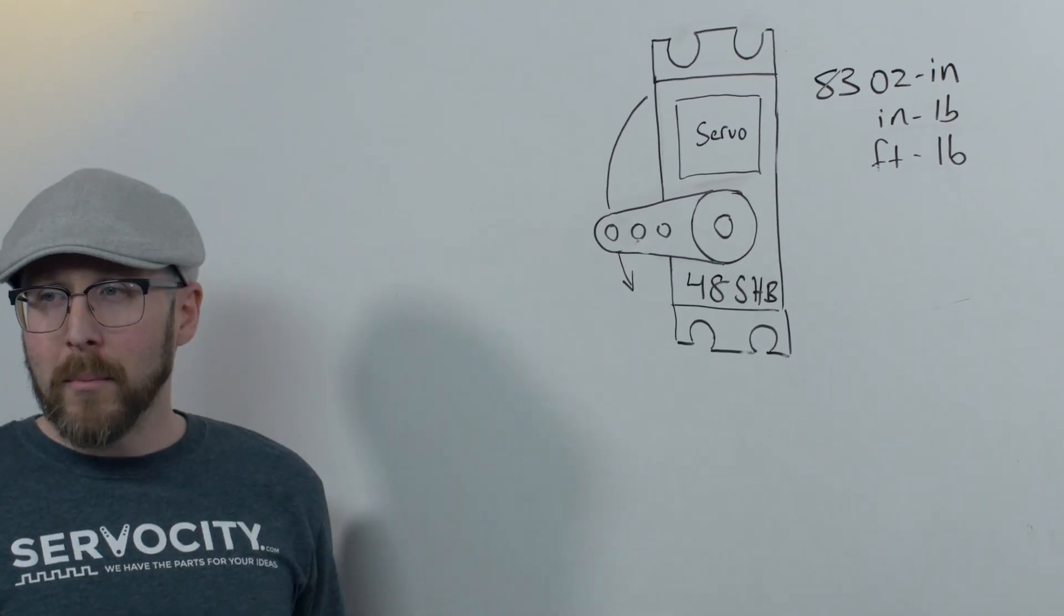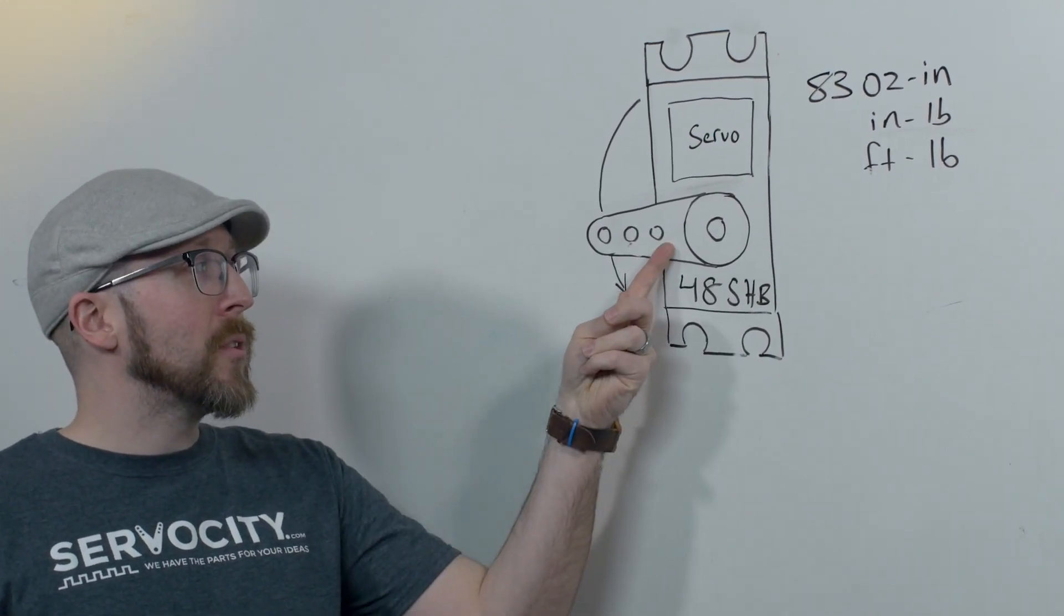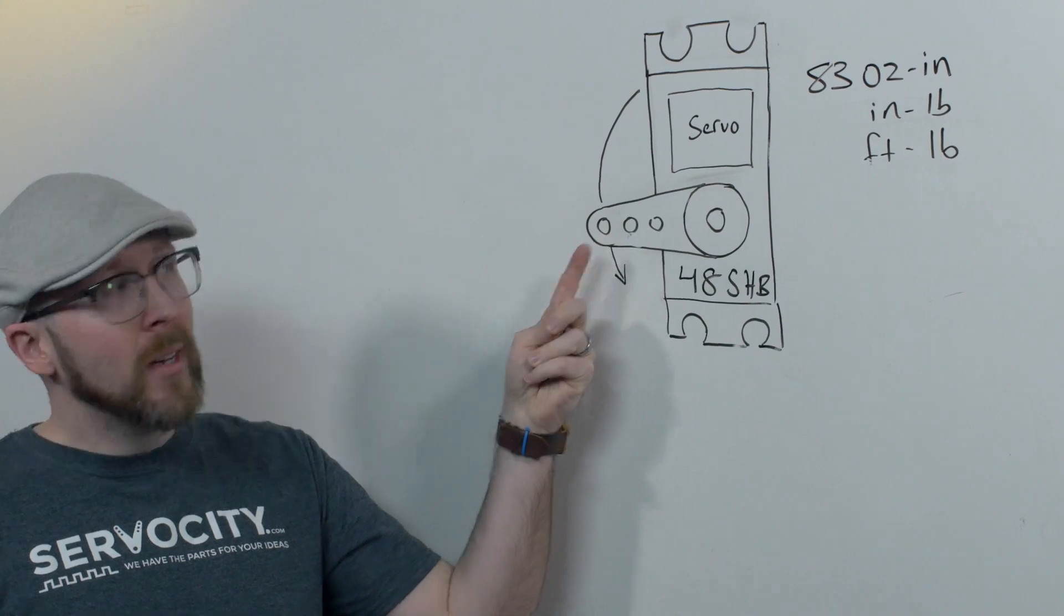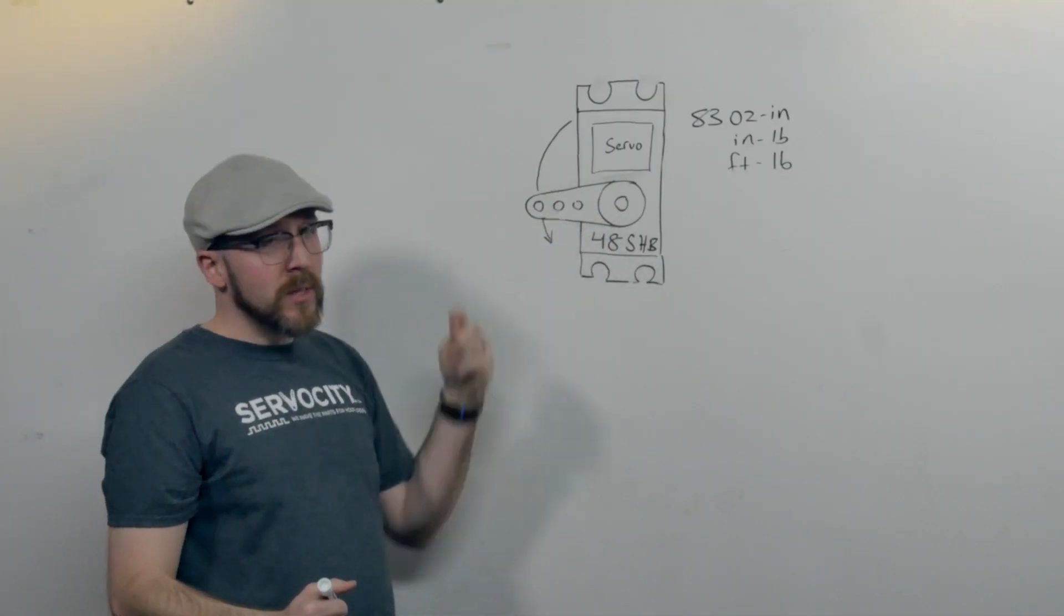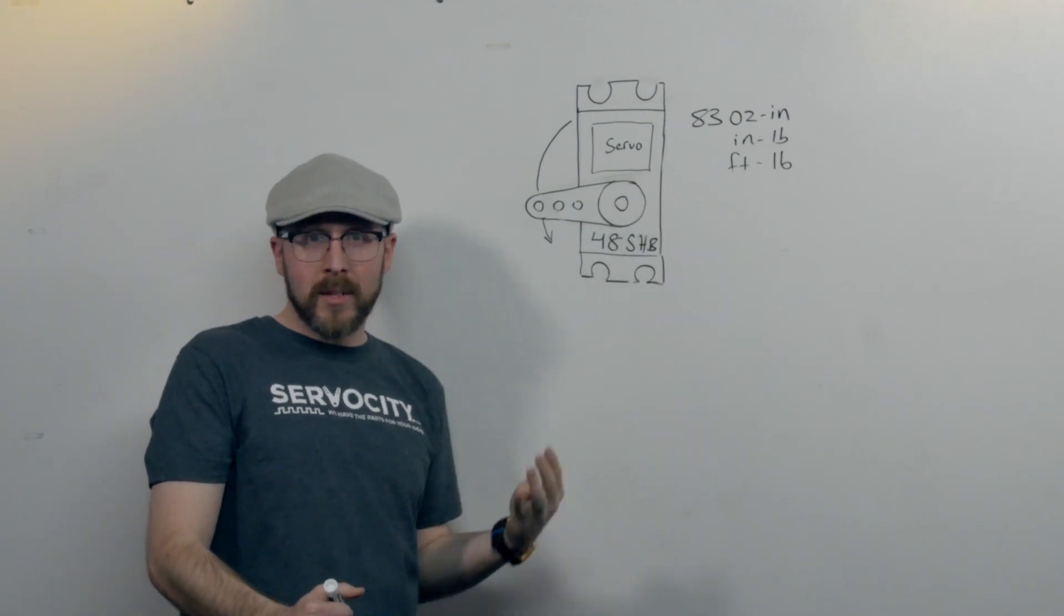Let's imagine that my drawing here has three holes at half an inch, one inch, and two inches. At one inch away from the center of rotation, perpendicular to the servo arm, I can move a load of 83 ounces.